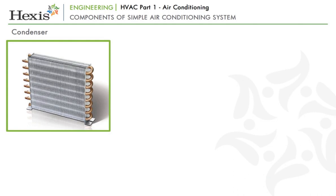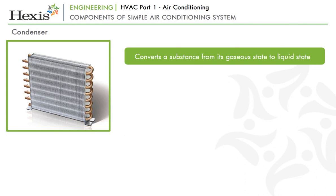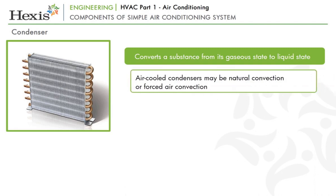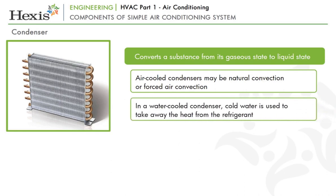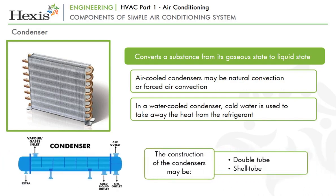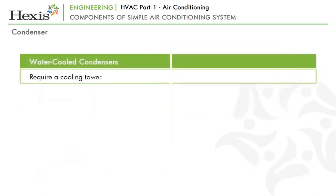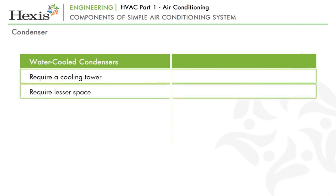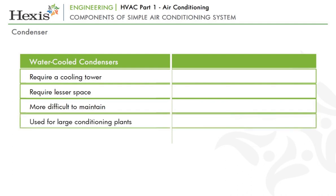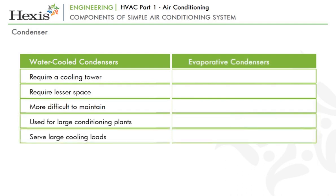A condenser is a device used to convert a substance from its gaseous state to liquid state. In this process, heat is transferred from the substance to its surrounding medium or a condenser coolant, which may be air or water. Air-cooled condensers may be natural convection or forced air convection — in both, air flows over the condenser tubes cooling the refrigerant inside. In a water-cooled condenser, cold water is used to take away heat from the refrigerant. The construction may be double tube or shell tube. Water-cooled condensers require a cooling tower to take away heat from the water and resupply it for condenser cooling. They require lesser space but are more difficult to maintain and are used for large conditioning plants.